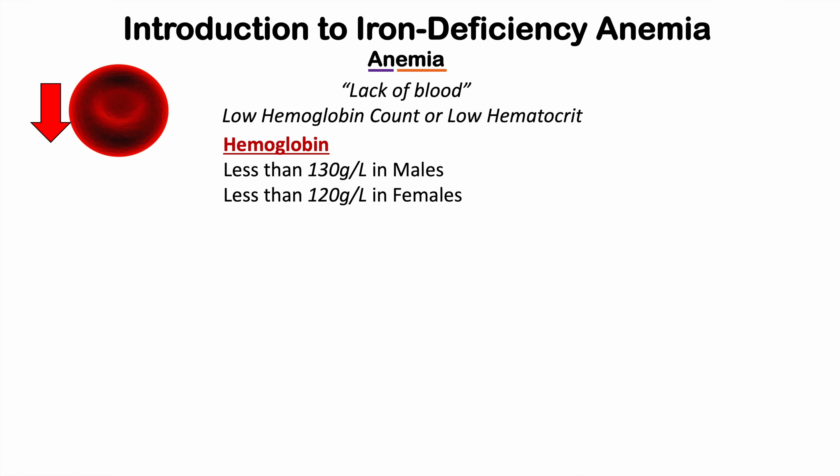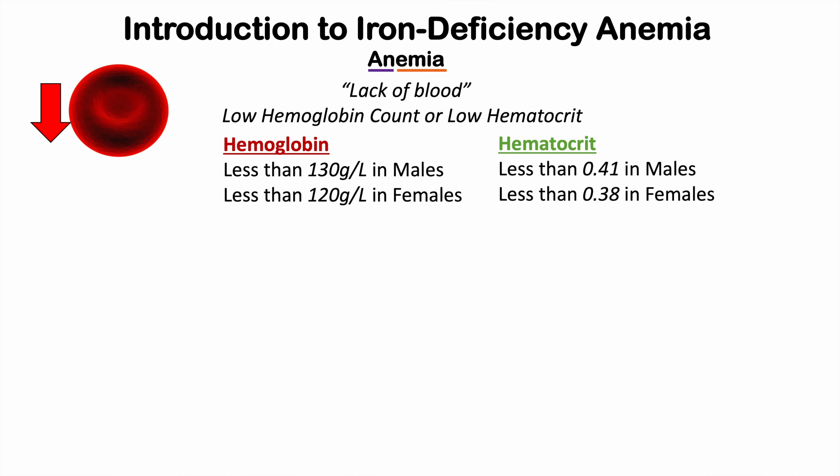These numbers are going to be different in different references, but for the most part, with hemoglobin, if it's less than 130 grams per liter in males, that would be considered anemia. If it's less than 120 grams per liter in females, that would be considered anemia. With regards to hematocrit — the ratio of red blood cells in the blood — if it's less than 0.41 in males or less than 0.38 in females, that would be considered anemia.